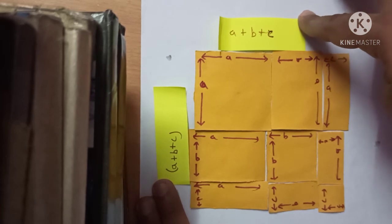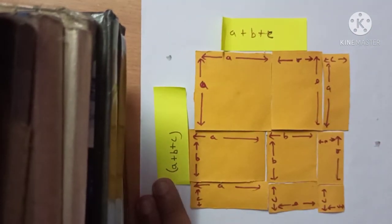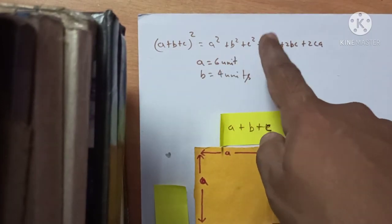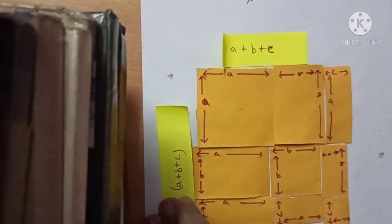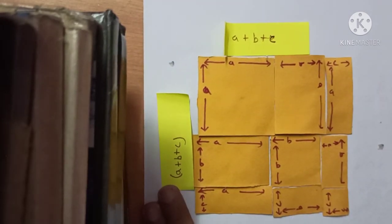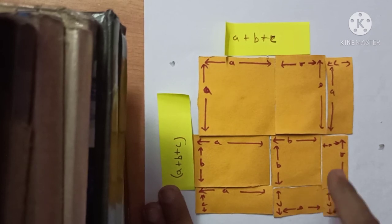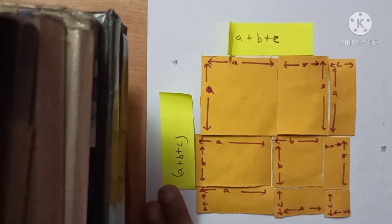So the area of this square will be length into breadth, that is a plus b plus c into a plus b plus c, which is a plus b plus c whole square. With this, the identity is proved: a plus b plus c whole square is equal to a square plus b square plus c square plus 2ab plus 2bc plus 2ca. Hope this is understood. Thank you class.